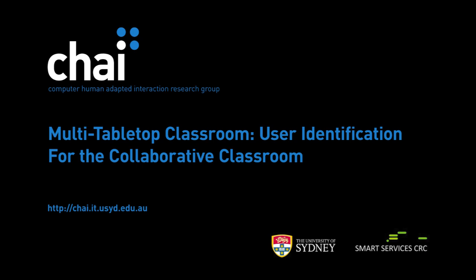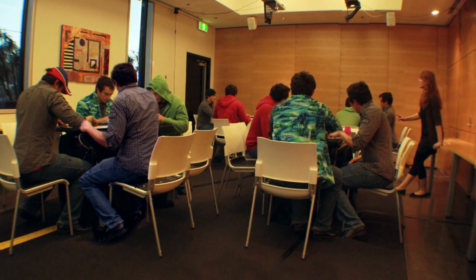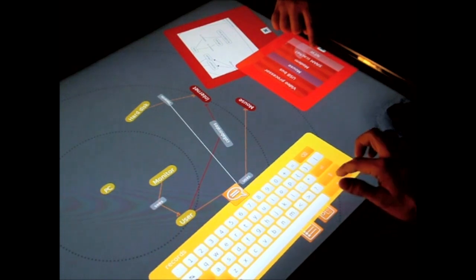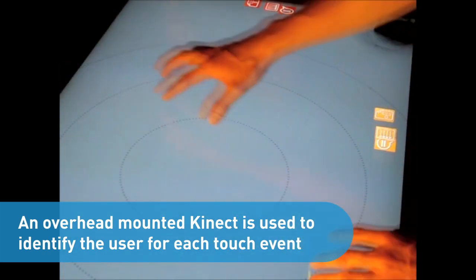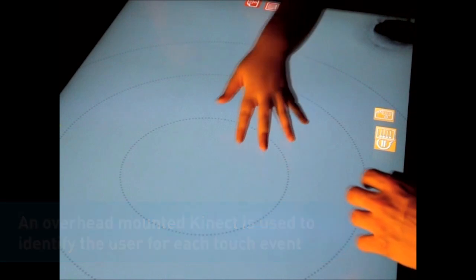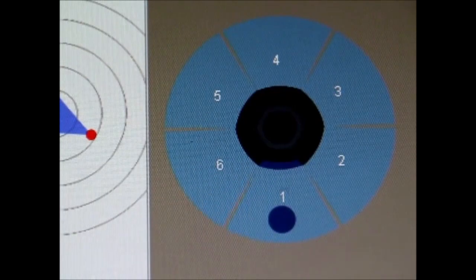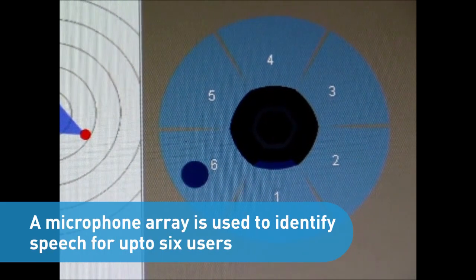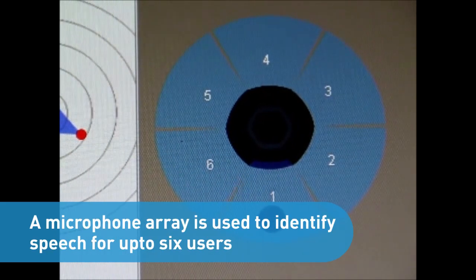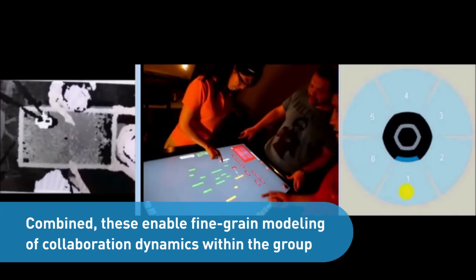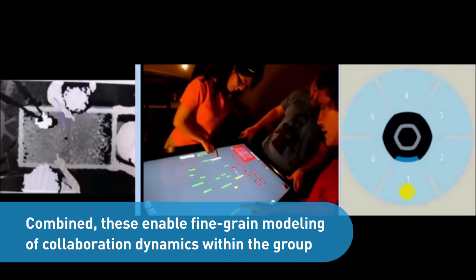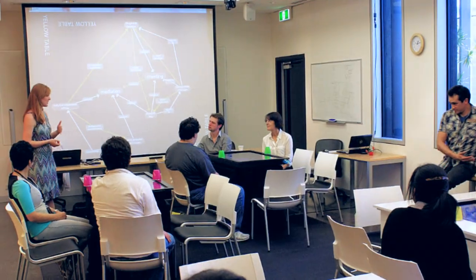The tabletop can further enhance group collaboration and learning by capturing information about what learners are doing, and providing feedback to them and to teachers in a classroom setting. In one example, students complete a concept mapping activity. The tabletop uses an overhead depth sensor to track who is touching the tabletop, and a microphone array identifies who is speaking. Novel data mining techniques help the teacher identify student contributions, while a dashboard tool on each tablet lets the teacher view group information and orchestrate classroom activity.